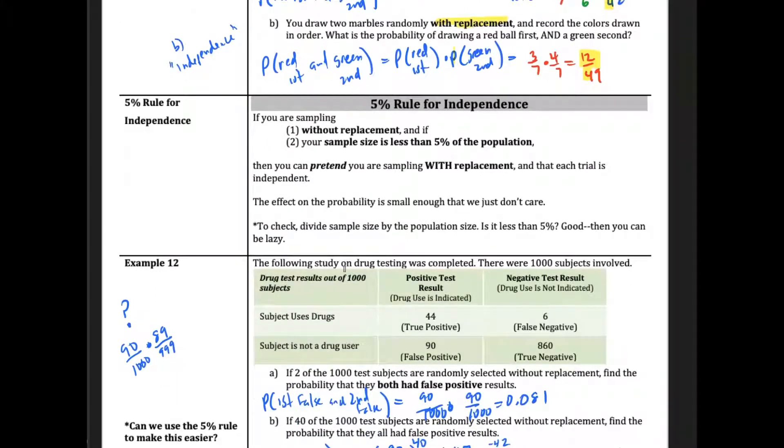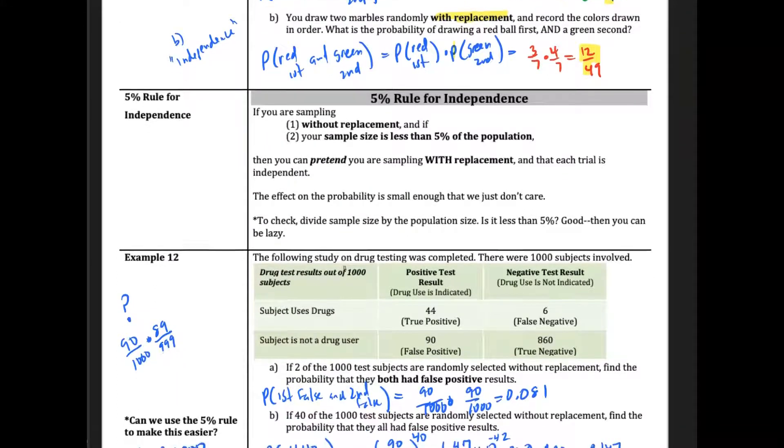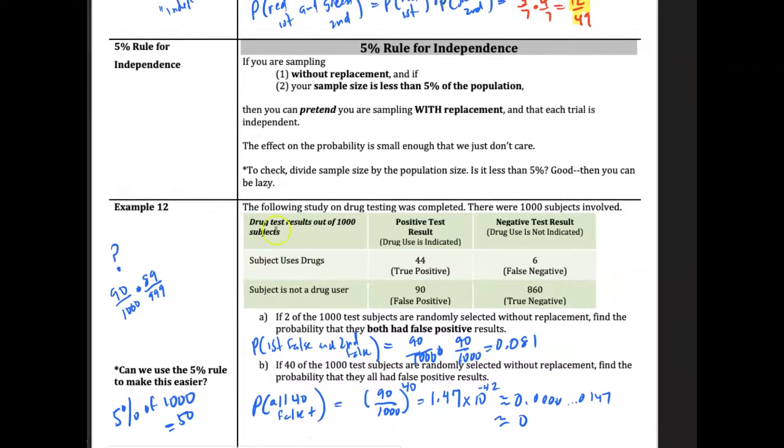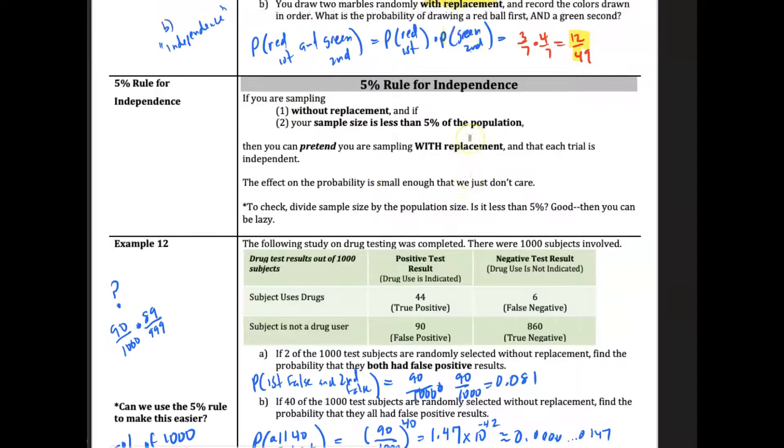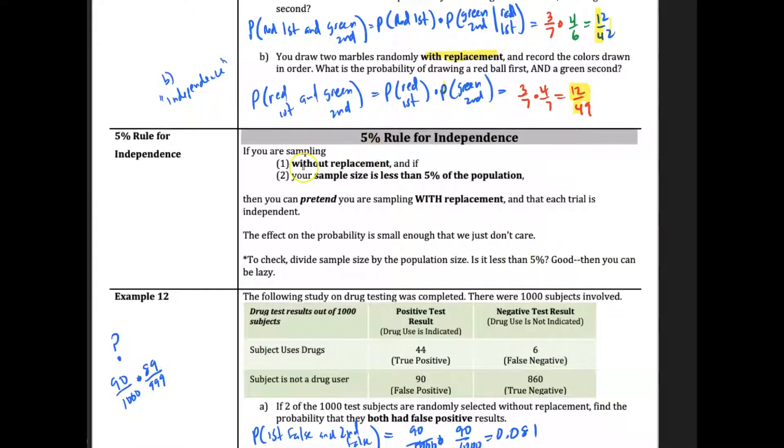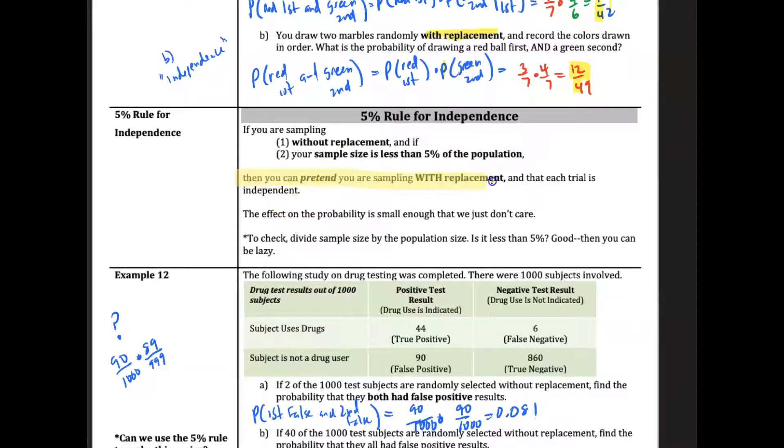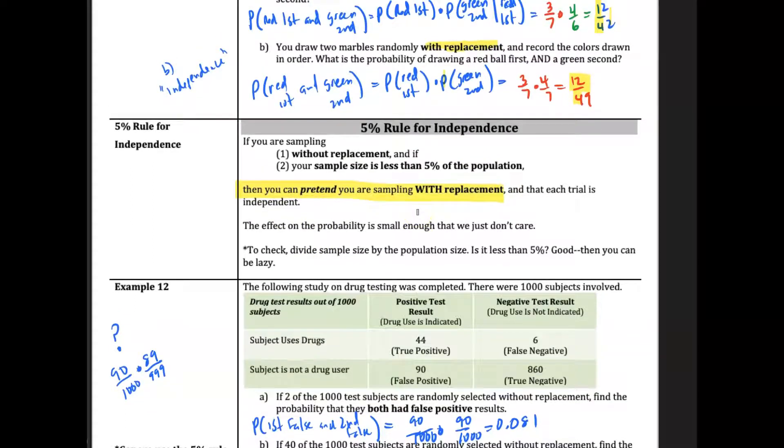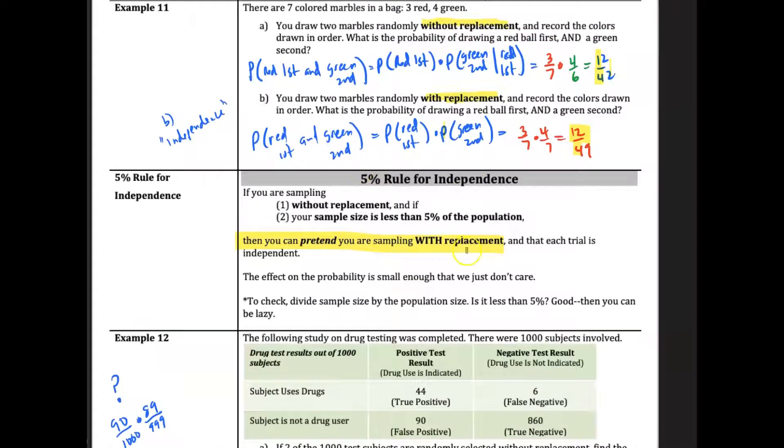And then lastly, we talk about this independence in another context, is whenever we are going to be sampling without replacement, we end up with this dependency. We end up with having to change the calculations because one's dependent upon the other. However, if your sample size, when we're sampling, is less than 5% of the population, we can pretend we're just sampling with replacement. It simplifies all of our calculations.